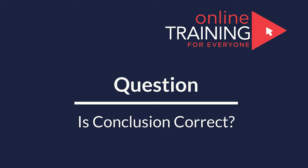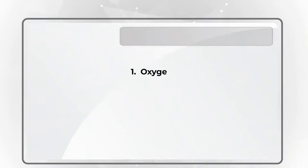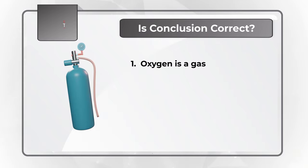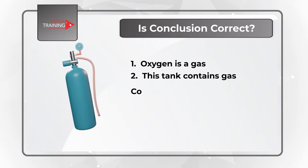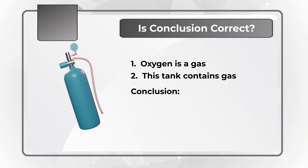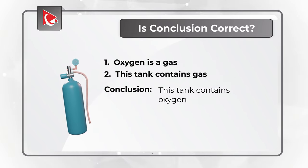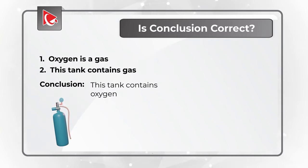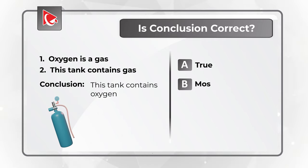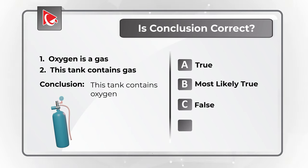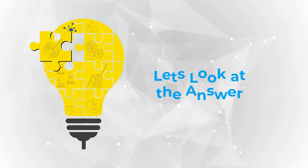Let's look at the question where you need to come up with the logical conclusion. Oxygen is a gas. This thing contains gas. Conclusion that was drawn based on these two statements is that this thing contains oxygen. You need to determine if this conclusion is correct. And your choices are choice A, true, choice B, most likely true, choice C, false, and choice D, cannot determine. Do you see the answer?